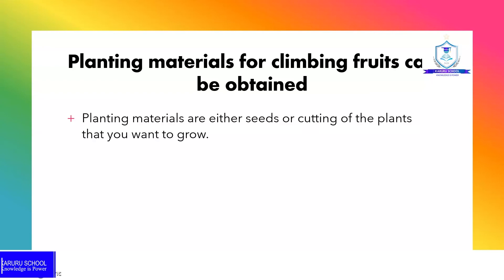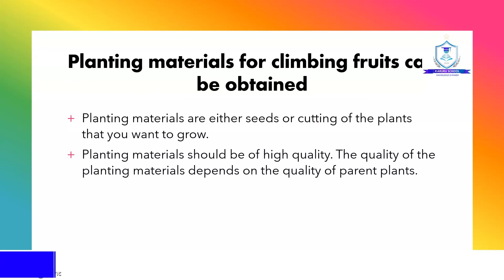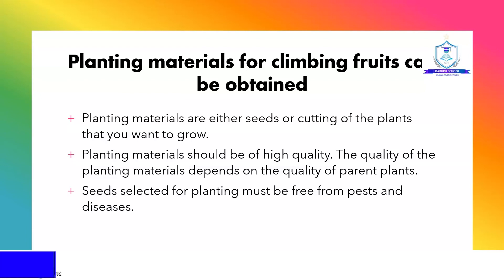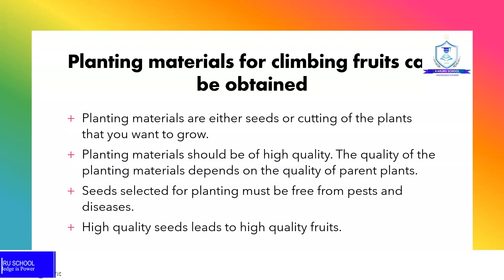Planting materials are either seeds or cuttings of the plants you want to grow, and they should be of high quality. The quality depends on the parent plants. Seeds selected for planting must be free from pests and diseases, as high quality seeds lead to high quality fruits.